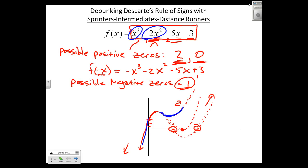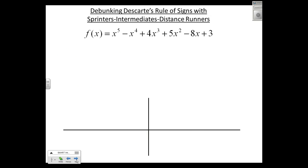So let's do the same thing with a more complicated function, only let's do it backwards this time. In other words, let's go ahead—sprinters, intermediate runners, distance runners. Here I start at 3.